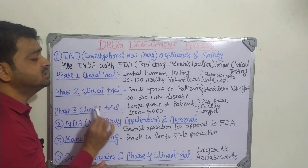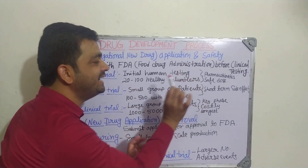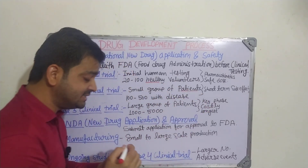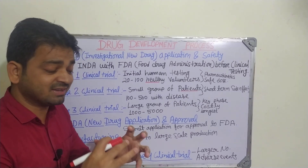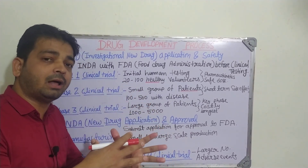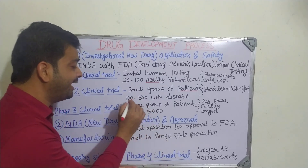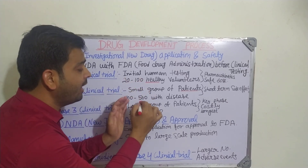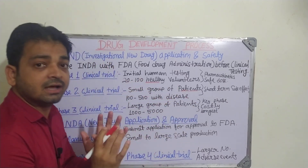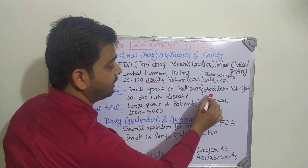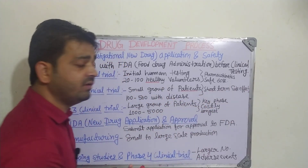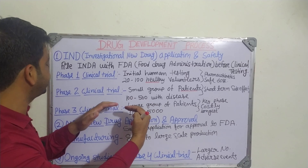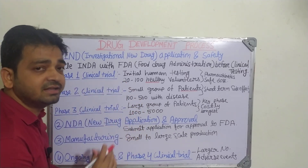Coming to Phase 2 clinical trial, here we use a small group of patients — those who are suffering from that particular disease. For example, for an anti-diabetic drug, we take diabetic patients. The number increases: 100 to above 500 with the disease. Basically, we are looking for short-term side effects if they are developing, and we need to observe them. If it passes Phase 2, it has to go for Phase 3 clinical trial.